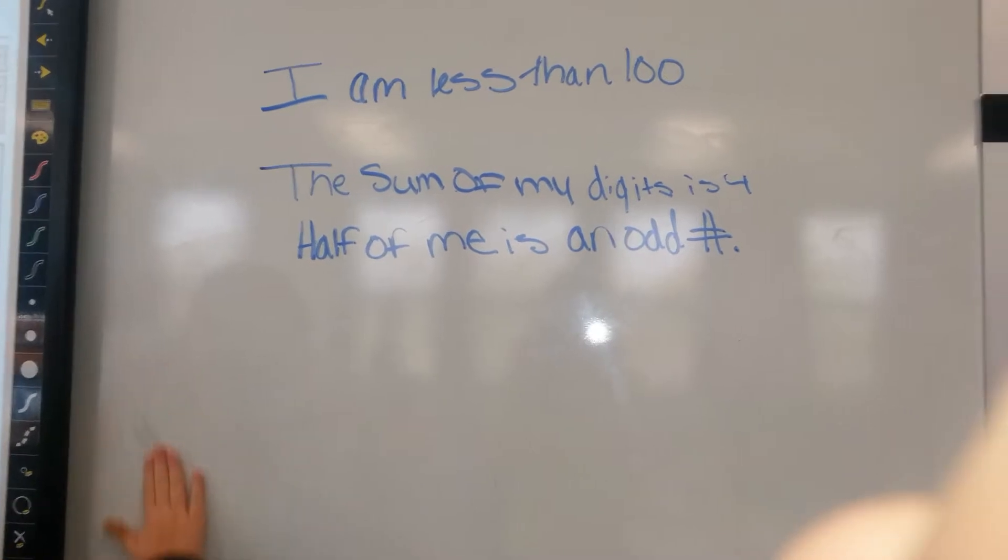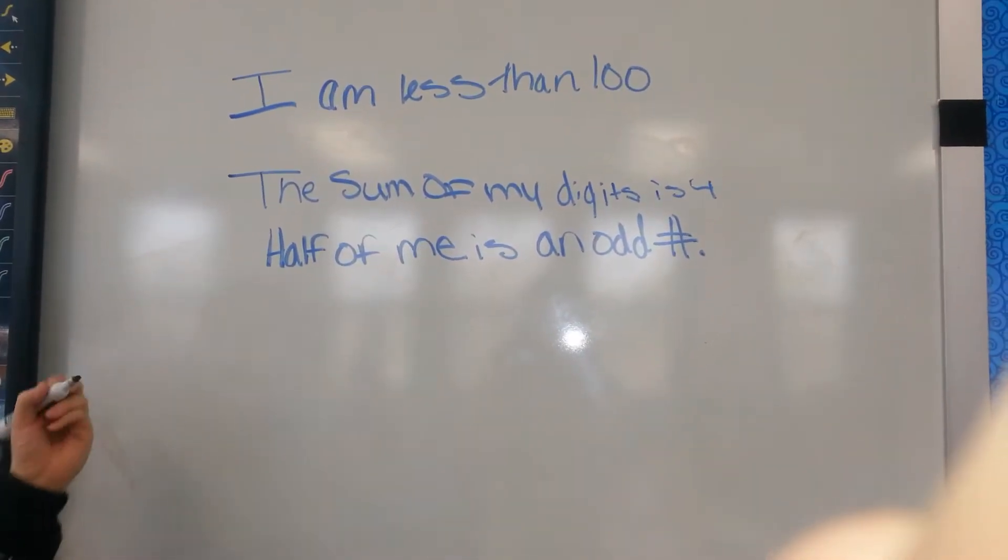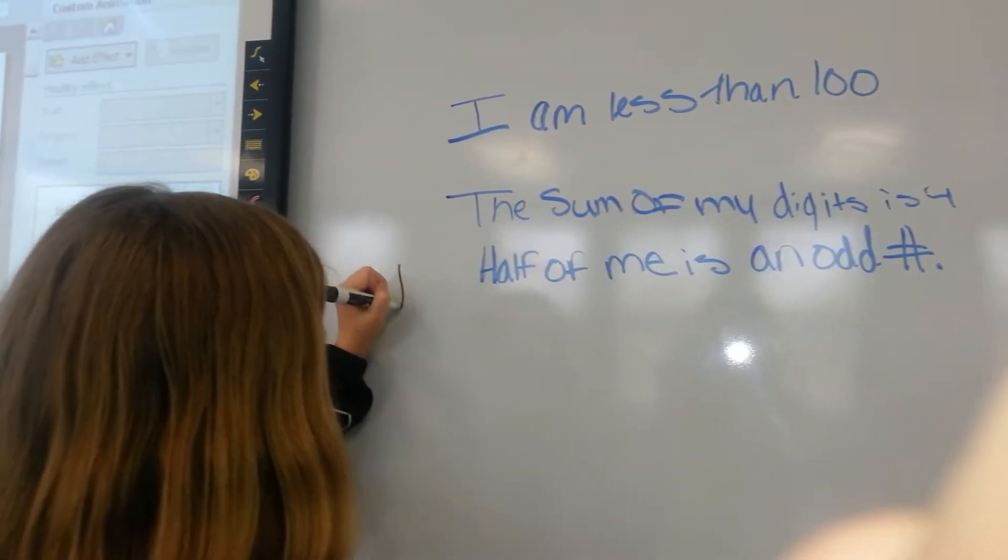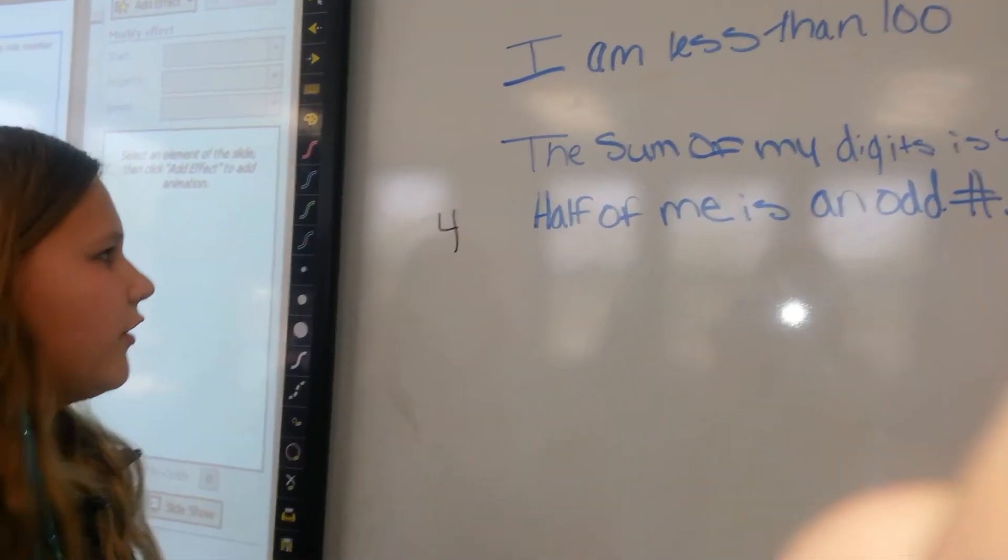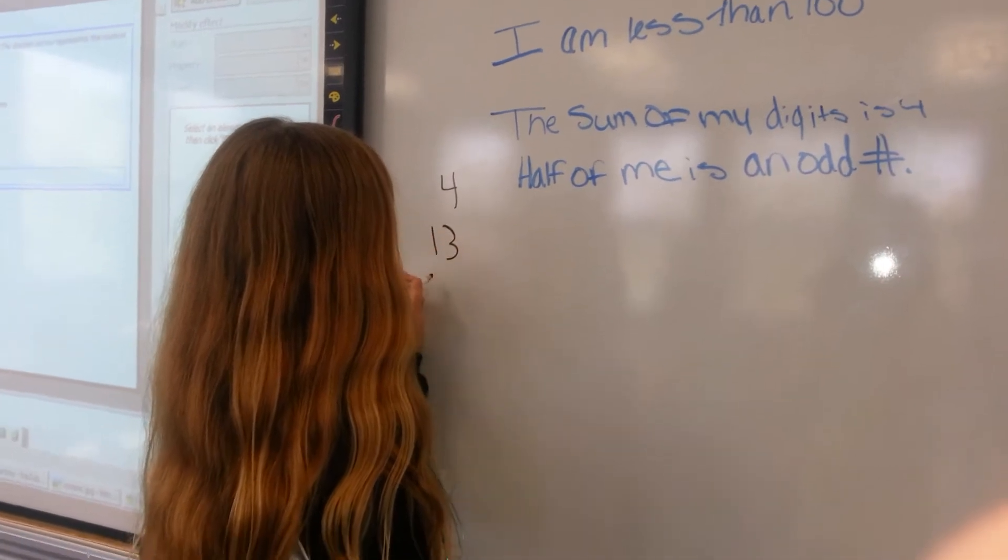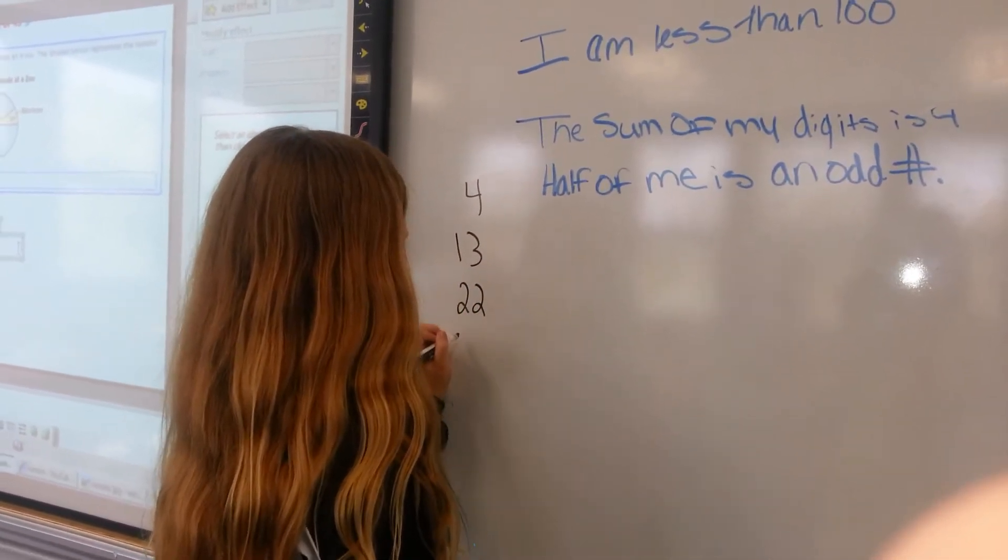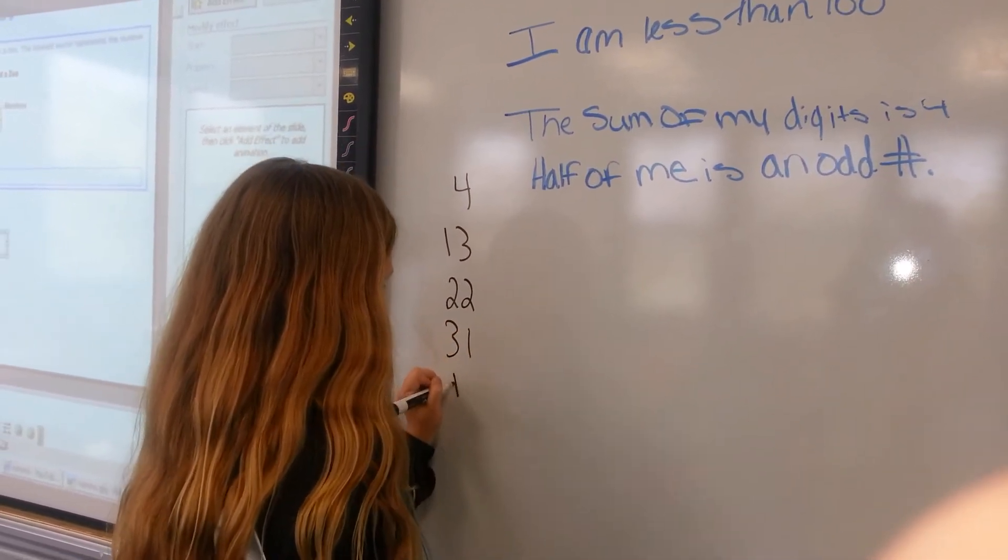So then, what I did is that I made a list. Whenever it says that, it means if you add the two digits together, they'll equal 4. So, you go 4, 13, 22, 31, and 40.